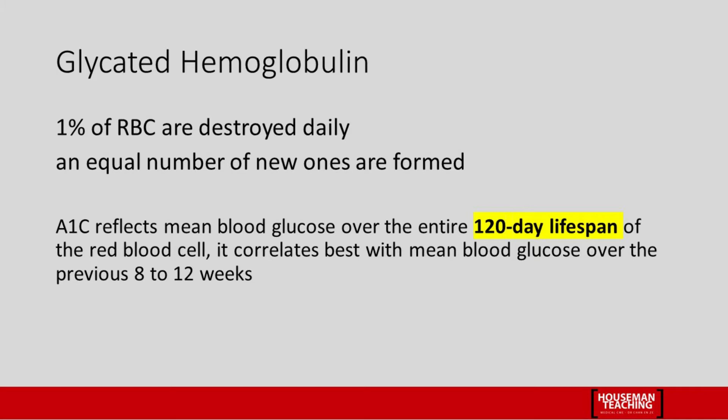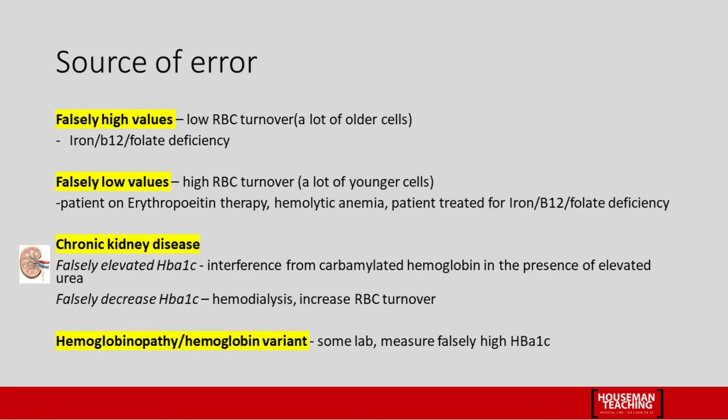About one percent of red blood cells in your body are destroyed daily, and equal numbers of new ones are formed. Since the lifespan of the red blood cell is about 120 days, HbA1c reflects the mean sugar level in the body over the lifespan of the red blood cell. Well, actually it reflects blood sugar for the past 8 to 12 weeks, even though the lifespan of the red blood cell is around 120 days. HbA1c is not a perfect tool to measure sugar.